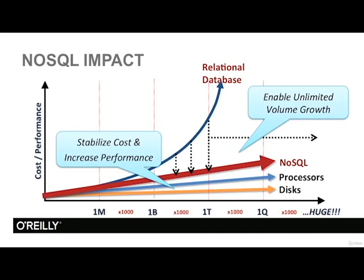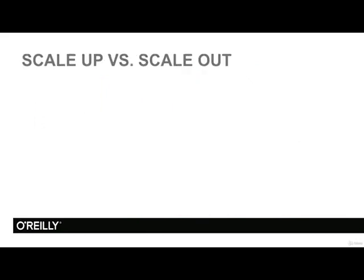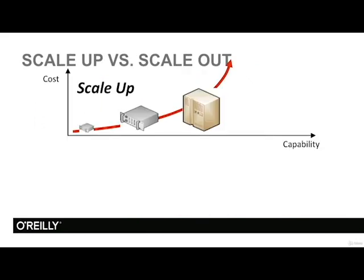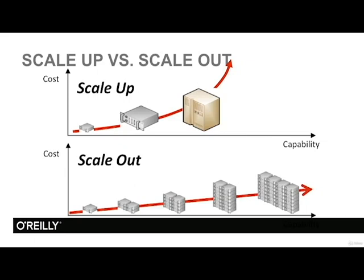What we are trying to do with NoSQL solutions is two things: get a linear response for cost and performance, and allow for unlimited volume growth. When it comes to processing, we have two approaches. The scale-up approach, commonly used with relational databases, gets a bigger and bigger computer when you need more capability. In the scale-out approach, you run on relatively inexpensive machines but use more of them. Scaling-out is the optimal choice for growing systems and is the common approach used in NoSQL systems — the same approach Hadoop uses.